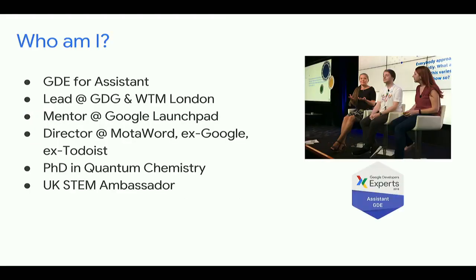A little about myself: I'm a Google Developer Expert for Assistant. I'm leading Google Developer Group and WTM communities in London for three years. Before that I lived for over 10 years in Germany, in Stuttgart. I also ran GDG Stuttgart. I mentor startups in Google Launchpad, a sixth-stage incubator by Google, helping people leverage AI in their products. I'm director at Motor World, used to work for Google in Munich and Hamburg, did my PhD in quantum chemistry, and I'm a UK STEM ambassador teaching kids to code in Python, Micro:bit, and Scratch.